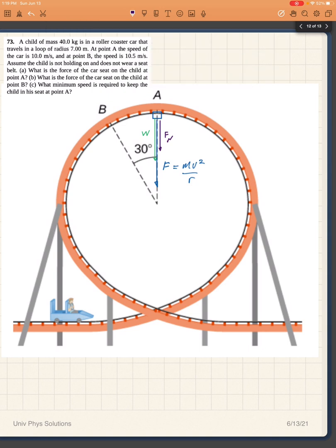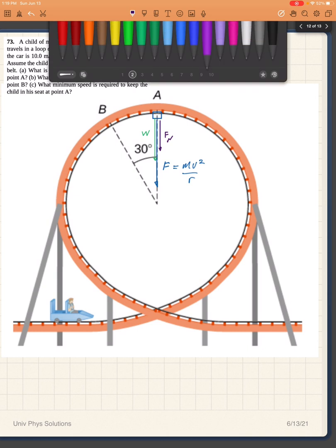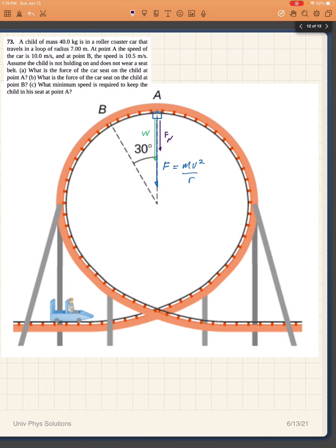It is that normal force that we are asked to find out. So let's put those things together. So for part A we know that mv squared over R has to be equal to the sum of the normal force plus the weight.